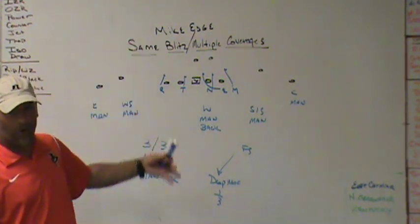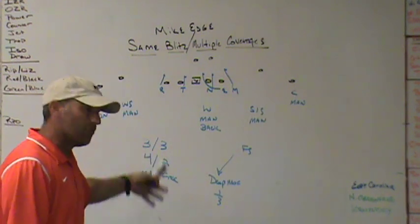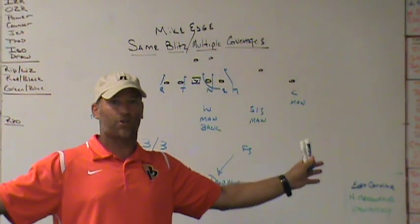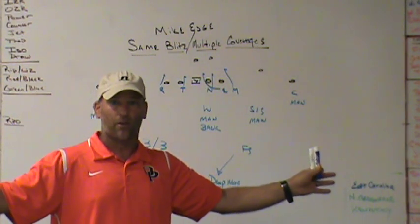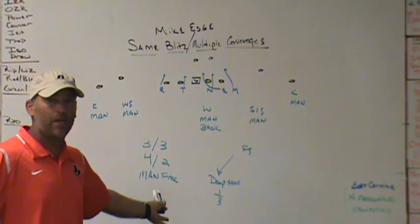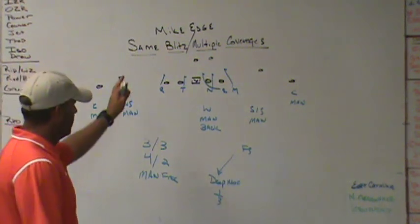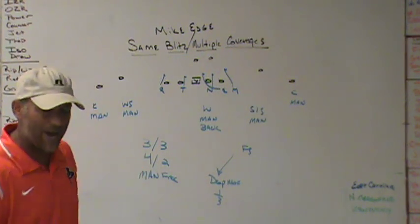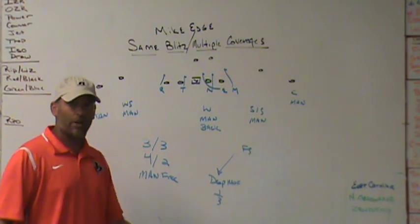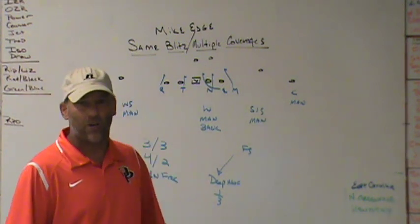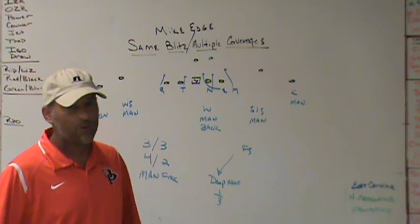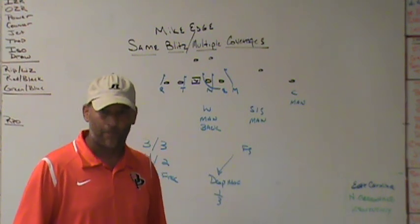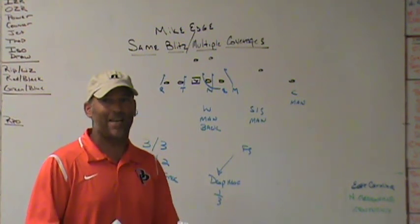So with that Mike edge pressure, we've got three coverages behind it: three-under three-deep, four-under two-deep, and man free. If they want to throw routes they thought were good against three-under three-deep or four-under two-deep, are they good against man? I've got a deep post player in the middle who can help with the long ball. Now the quarterback, offensive coordinator, and receivers — when that Mike edge comes, they don't know what coverage they're getting. You've got to match the Mike edge pressure with the right play, and hopefully you'll have called the right coverage to take that away.